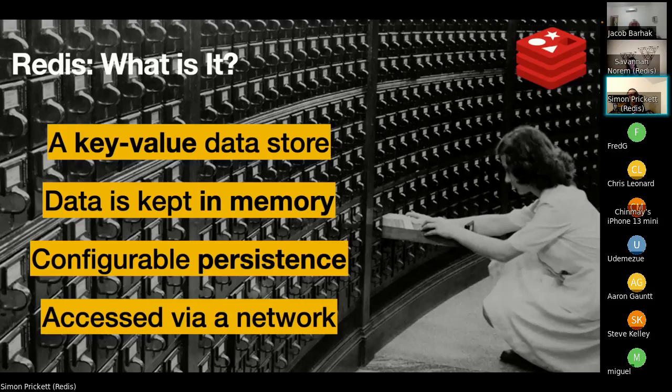That usually leads to the question: what happens if we pull the plug or reboot the server? A lot of people don't know that Redis is also persistent — you can configure how you want it to persist data back to a disk-based store, but it never reads from disk, which is why it's really, really fast. It's a network appliance accessed across the network on a port. Like other databases, you connect to a host and port, and can use a password or username if configured.